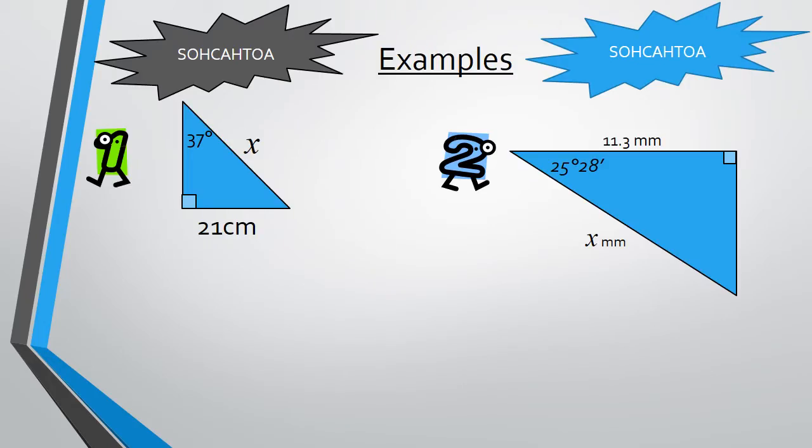Let's look at two examples. Example one. Start by scribbling off the side with no information and labeling. So the hypotenuse is the longest side. In front of the angle is opposite. Between the angle and the right angle is adjacent. We can eliminate adjacent in this case, leaving us with opposite and hypotenuse. From SOHCAHTOA gives sine.